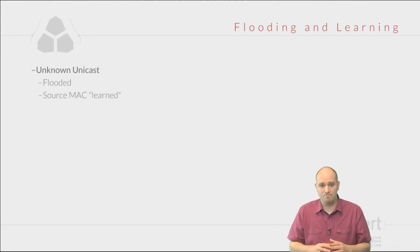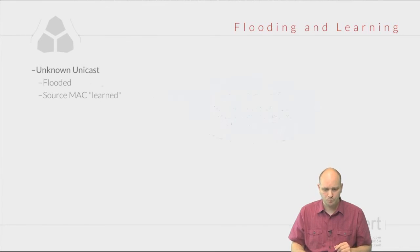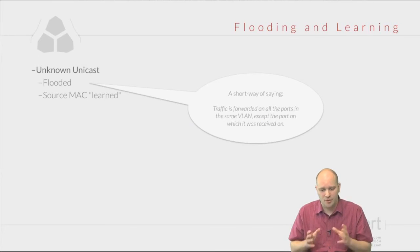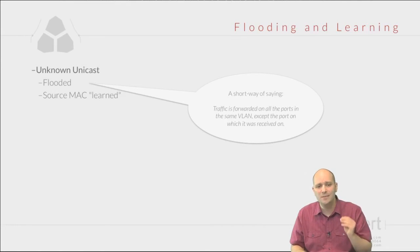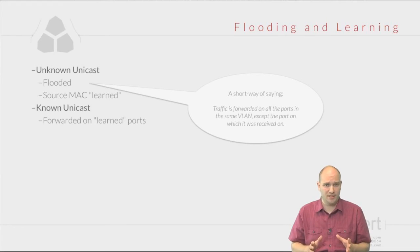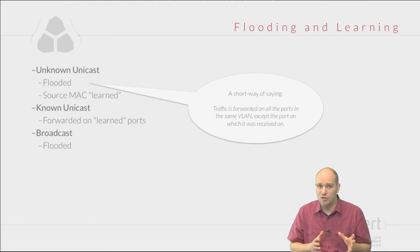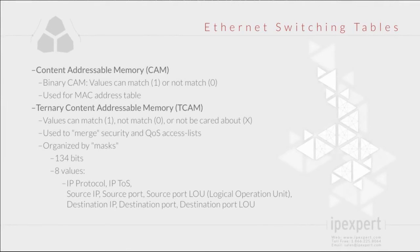To recap: unknown unicast traffic is flooded and the source MAC address is learned and stored in a special switching table. Flooding means the traffic is forwarded on all ports in the same VLAN except the port it was received on. Known unicast traffic is forwarded only to the port where the destination MAC address is known. Broadcast traffic is also flooded — sent out on all ports except the port it was received on.